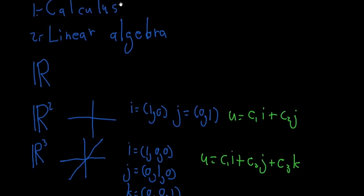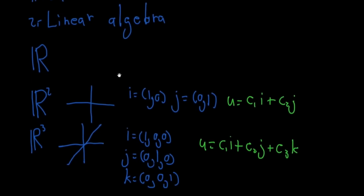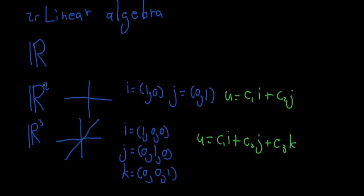For example, I have here examples of R2 and R3. This is a vector space — this is R2 and this is R3. R2 is represented with two vectors which are linearly independent. For example, the vector i and the vector j. This is the vector i and this is the vector j. And you know that any vector in R2, here is u, can be represented as a linear combination of these two vectors.